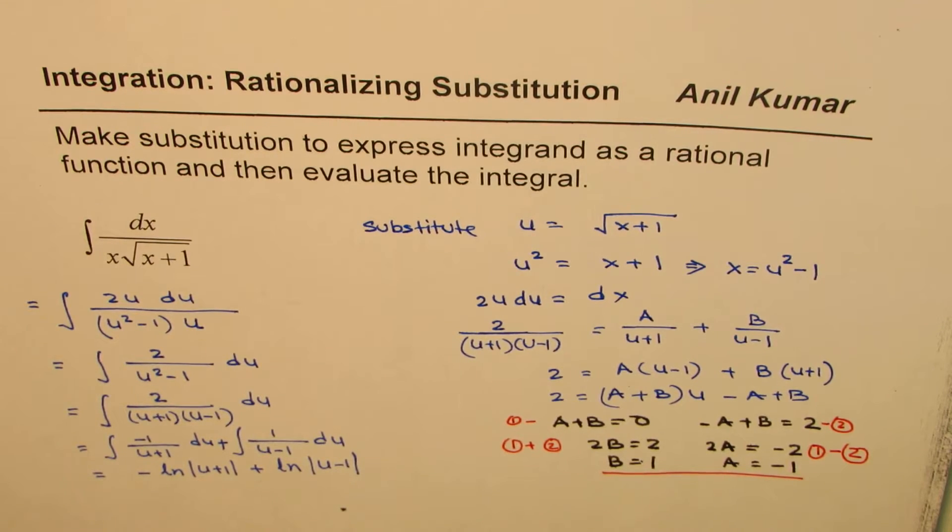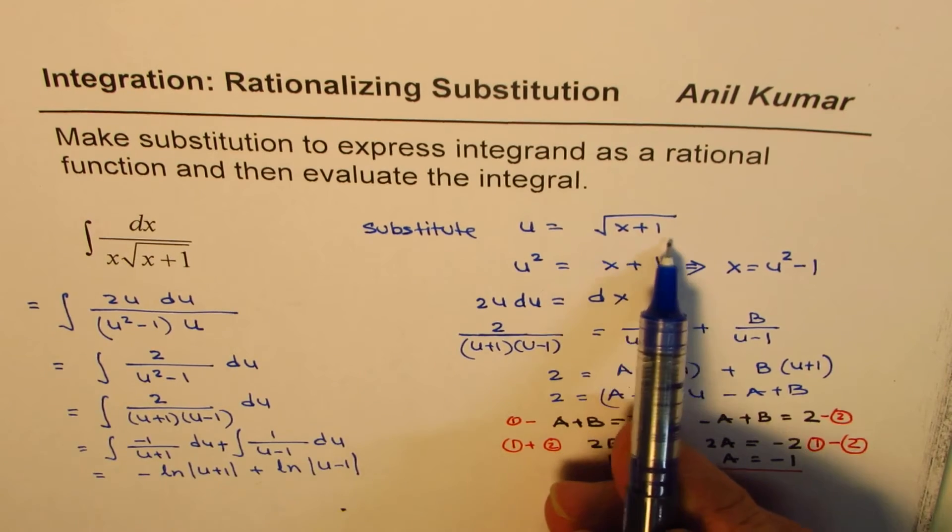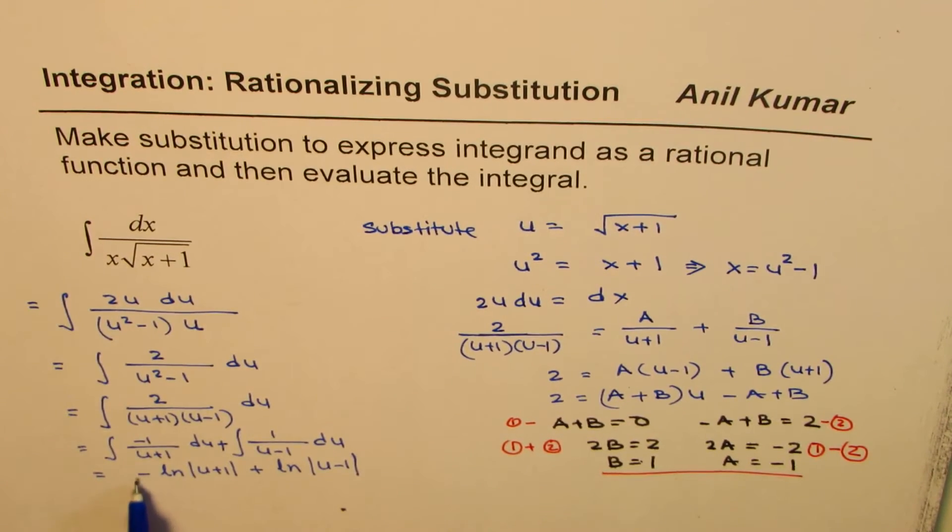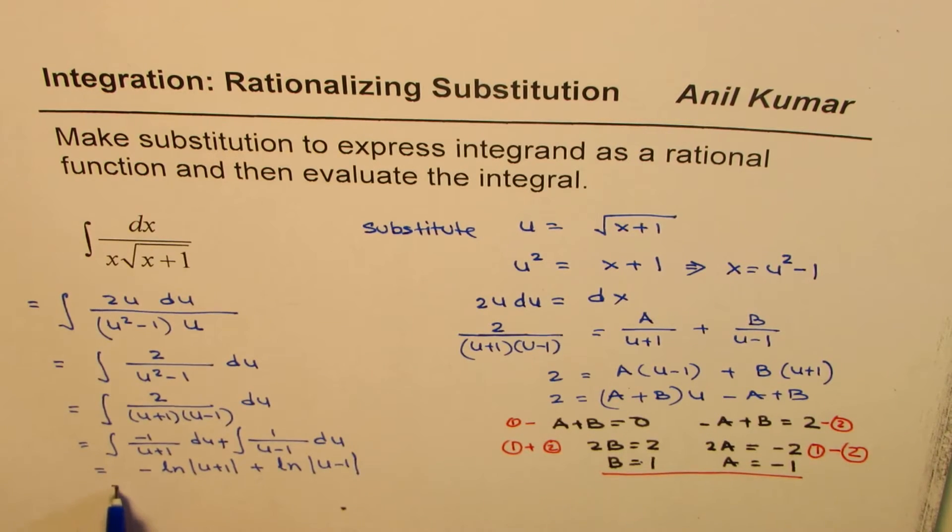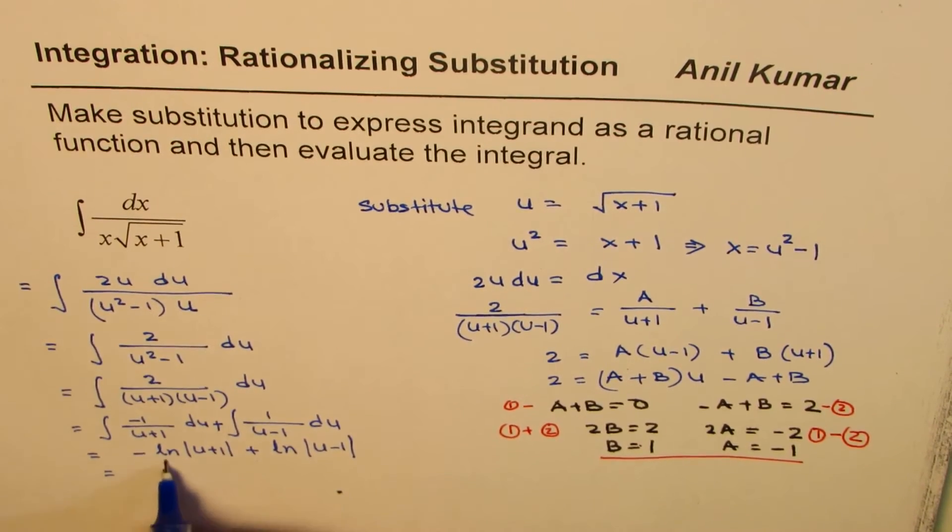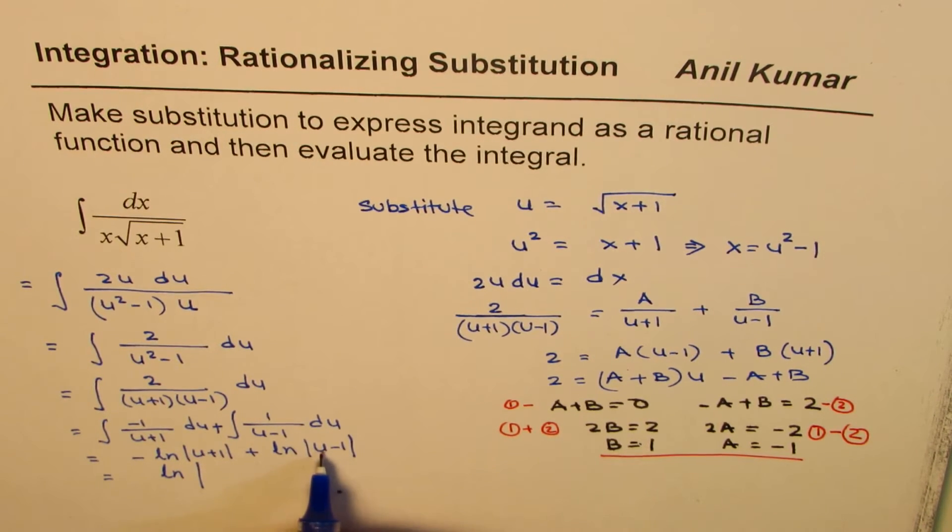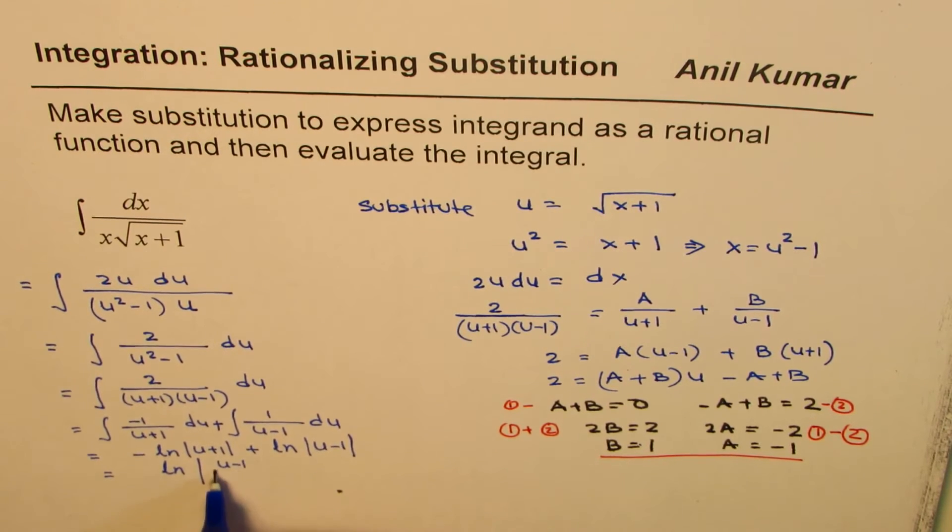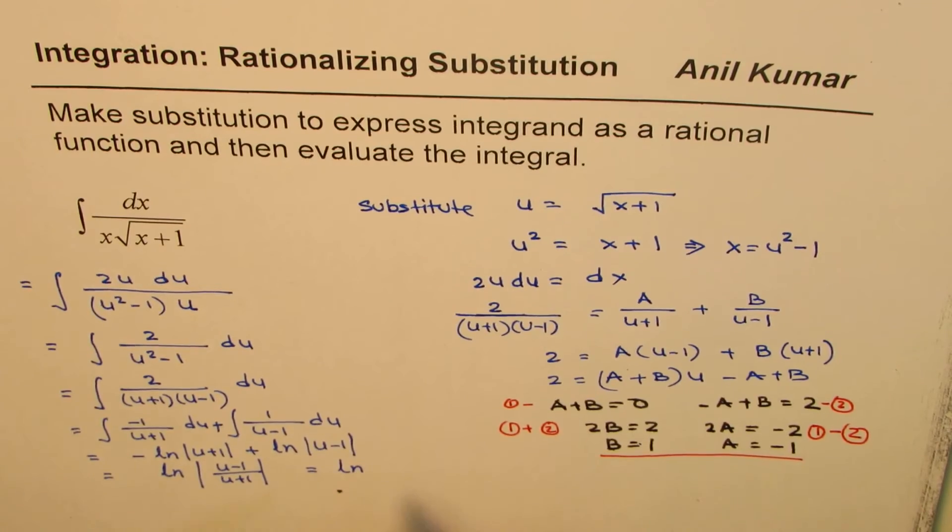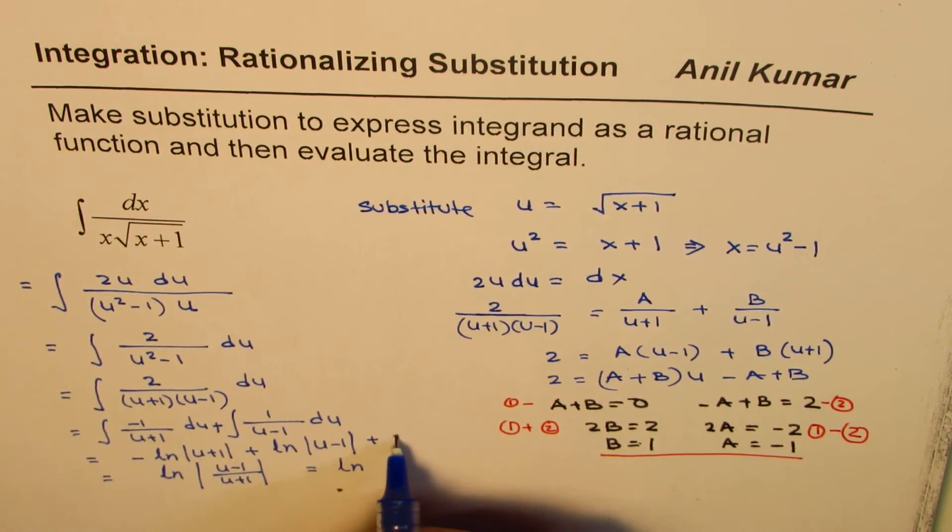So that is the solution but we need to substitute u by our expression. But anyway minus and this is plus really means that we could write this as ln absolute value of u minus 1 over u plus 1 and that is equals to ln and plus c.